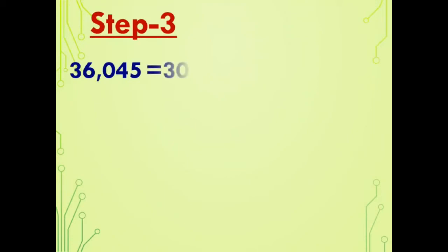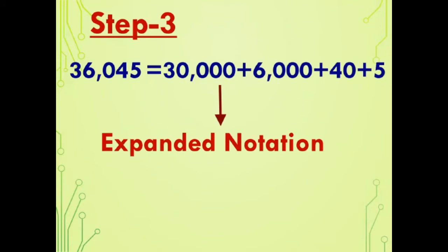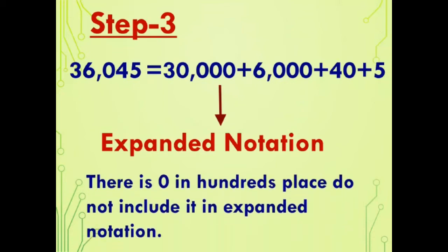Step 3: Write 36,045 as the sum of place values of digits. That is, 36,045 = 30,000 + 6,000 + 40 + 5. This is the expanded notation form — it represents the number as the sum of the place values of each digit. Note: there is 0 in the hundreds place, so we do not include it in the expanded notation.